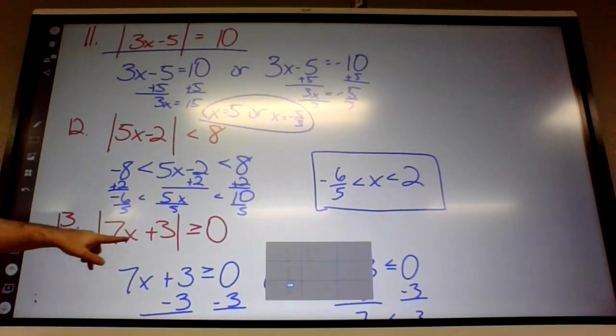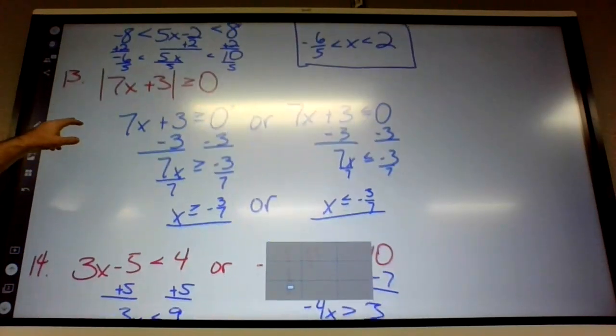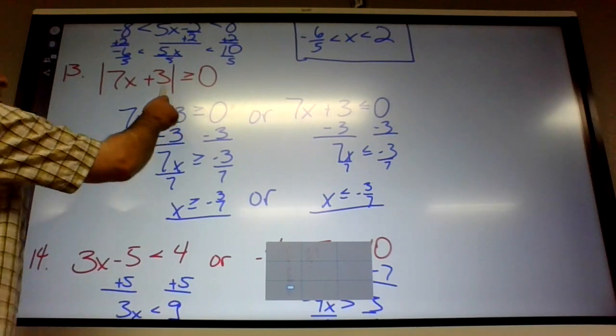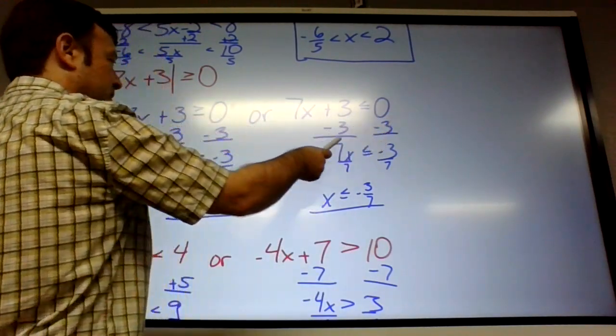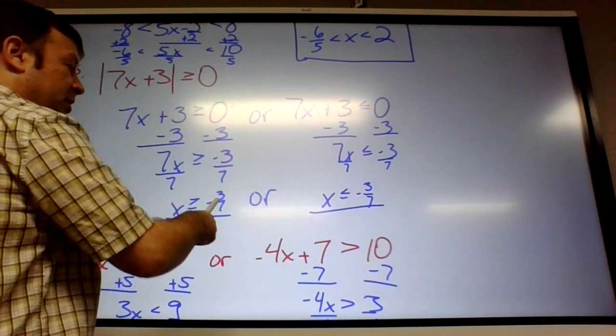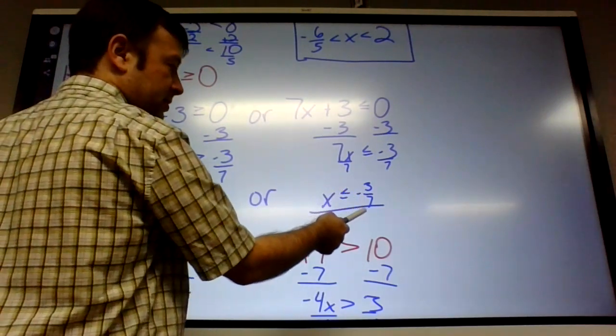Absolute value greater than is pretty similar to equals. You set up greater than or equal to 0 or less than or equal to 0. And they both came out as negative 3 7ths, but this one was greater than or equal to, and this one was less than or equal to.